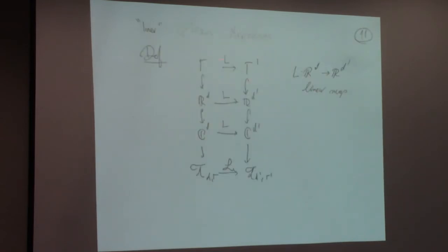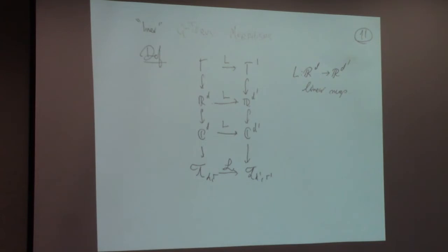What is a morphism of quantum tori? Going through all the diagram definitions, it is a linear map from Rᵈ to Rᵈ that sends the lattice to the lattice. All I am saying is that these definitions of quantum toric varieties and quantum tori as stacks over A recover the naive definitions you would expect for morphisms, and recover much more.